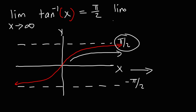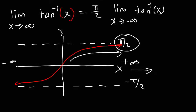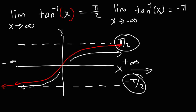Now if we want to find the limit as x approaches negative infinity of arctangent of x, negative infinity lies towards the left, so we need to follow the curve all the way to the left. Notice that it approaches negative pi over 2. The graph continues to travel horizontally, staying within the lower horizontal asymptote, so the answer is negative pi over 2.